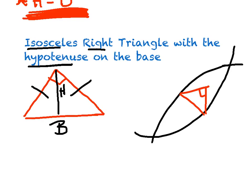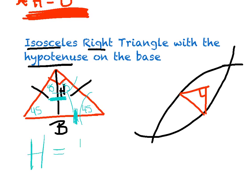Here's how I think of it: since it was isosceles and right, that's telling me each of these base angles is 45 degrees. When I draw in the altitude, I split that upper 90-degree angle in half, so now each of these angles is 45 degrees. I've basically created two more isosceles triangles. That tells me that if these angles are congruent, so are the sides across from them — this side is congruent to this side. And that shaded side is half of the base, therefore the height is equal to half the base.